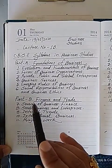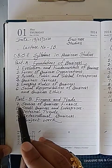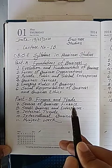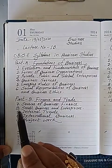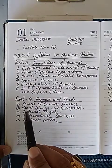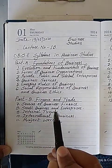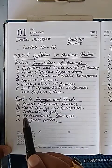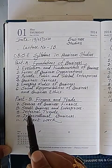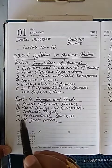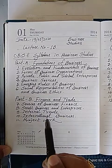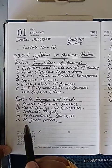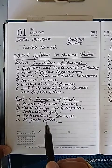In Part B, the seventh chapter is Sources of Business Finance. Eighth chapter is Small Business and Enterprises. Ninth is Internal Trade. Tenth is International Business. And at last, project work.